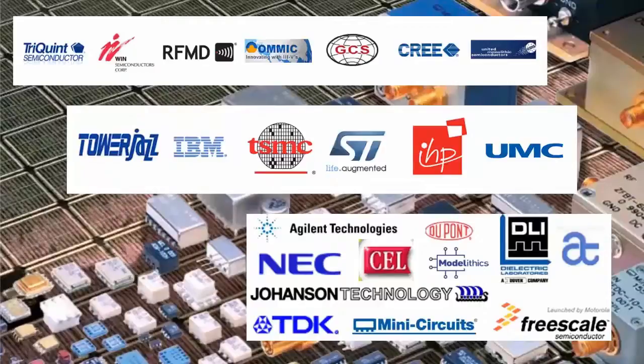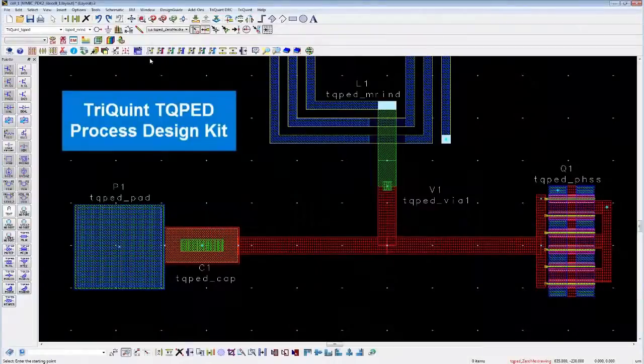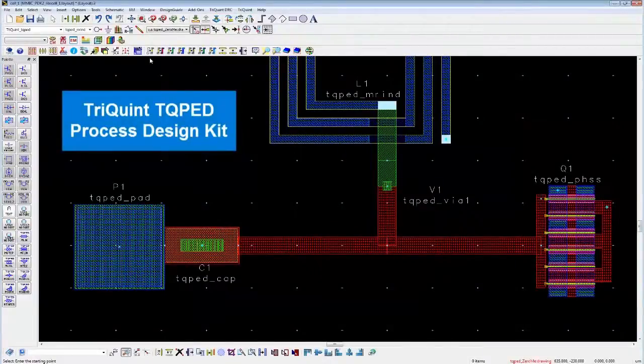While the breadth of the offering is important, the capability of the offering is even more important. Take, for example, this TriQuint Mimic Process Design Kit.